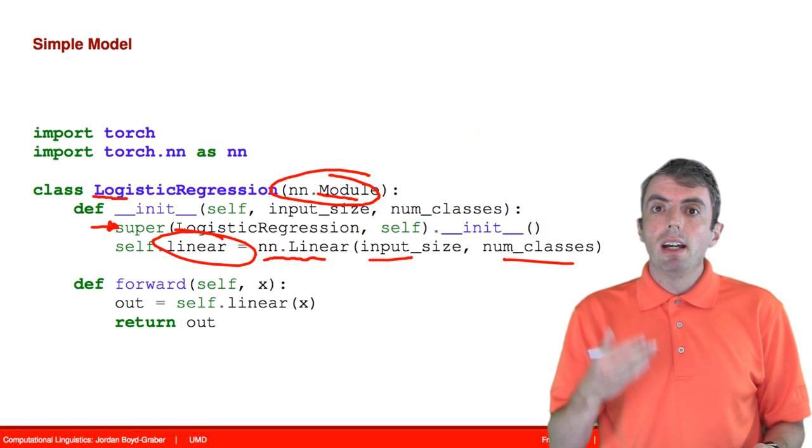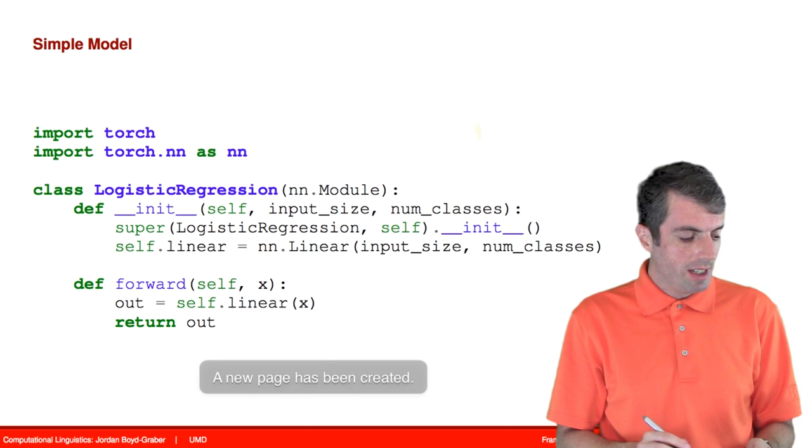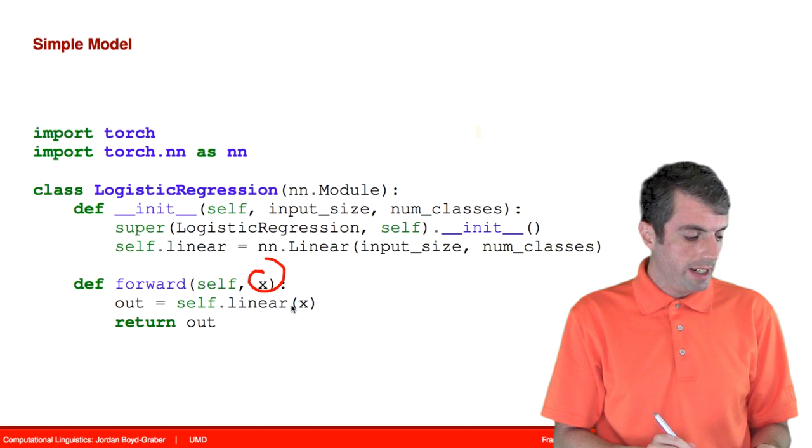Okay, so that's defined the parameters of the model. And everything that you're going to implement also has to have an output function or a forward pass, as we talked about last time when we talked about computational graphs. And here it's very simple. We just take whatever input we get and then we run it through our linear layer, and that's our output.